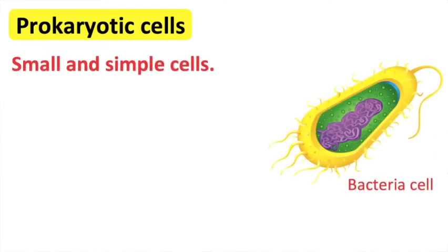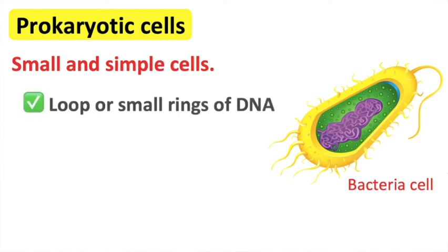Prokaryotic cells. These are small and simple cells. The genetic material of a prokaryotic cell are not enclosed in a nucleus. The genetic material is either in a loop or small rings of DNA. They are free-floating in the cell.